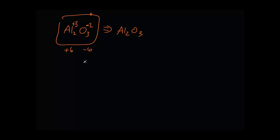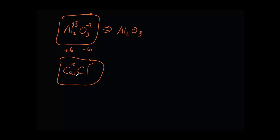How do you write calcium chloride? Elements, then charges, then the number of atoms to make an overall net charge of 0. Plus 2 times 1 is plus 2; negative 1 times 2 is minus 2. Calcium chloride is written as CaCl₂.